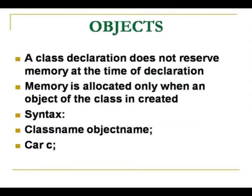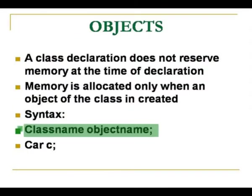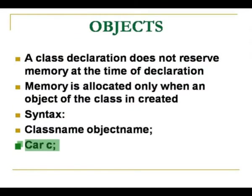In the previous programs, only when the statement 'Car c' is seen by the compiler will it allocate memory for the class. The syntax is: class name followed by object name. 'Car' is the class name and 'c' is the object name. This is the way an object is created.